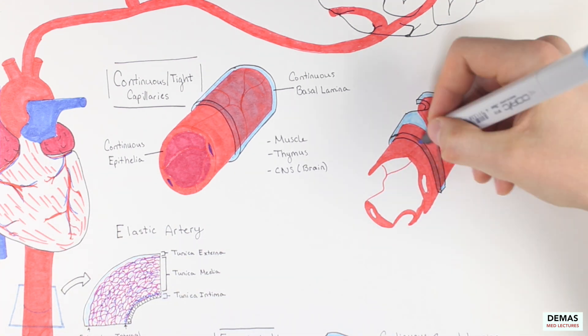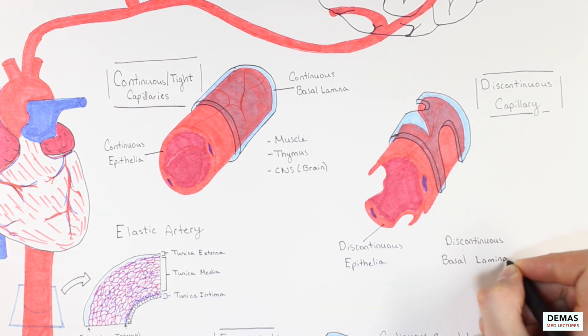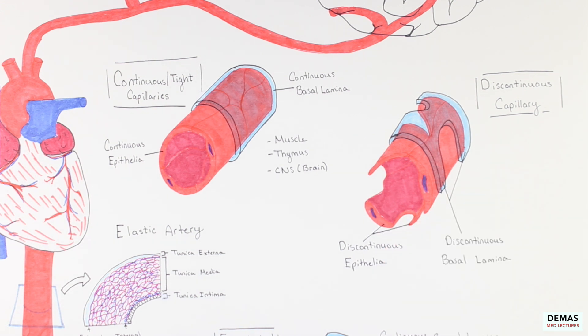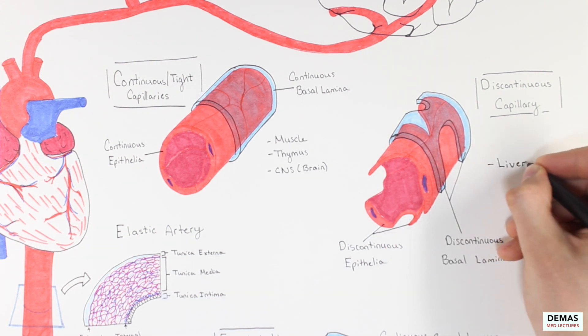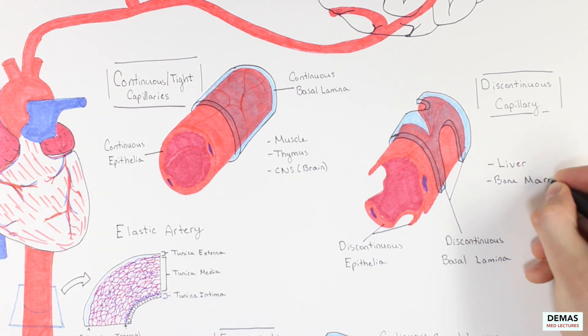The basal lamina is also very incomplete, as shown here. Discontinuous capillaries are found where free exchange of substances are needed, for example in the liver, the bone marrow, and the spleen.